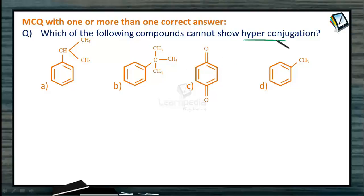Which of the following compounds cannot show hyperconjugation? Tell me what is the compulsory condition for an organic compound to exhibit hyperconjugation?